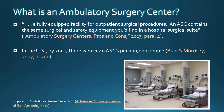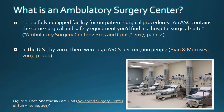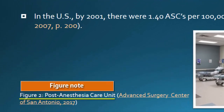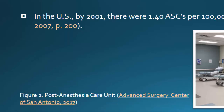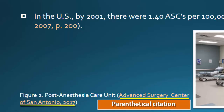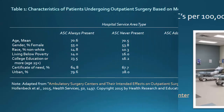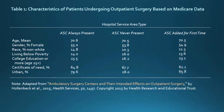Also on this slide is another use of a web image, which again is considered a figure and must be labeled in sequence with other figures and contain a brief caption describing it, followed by the parenthetical citation. In this case, the owner is again an entity — Advanced Surgery Center of San Antonio — not a person.